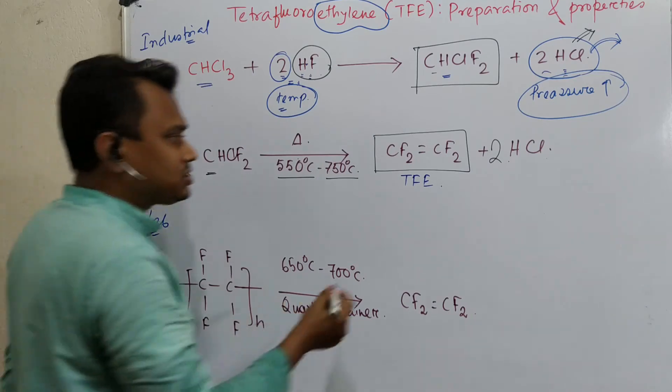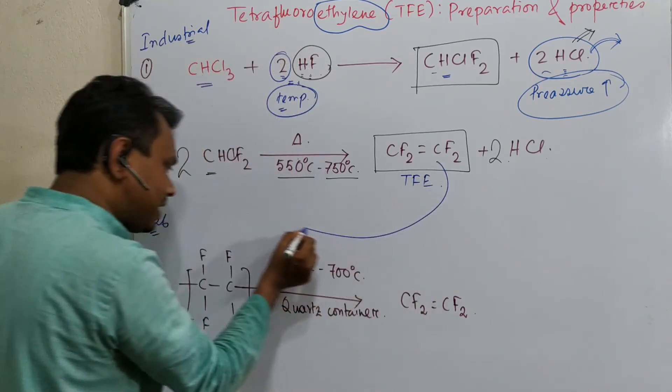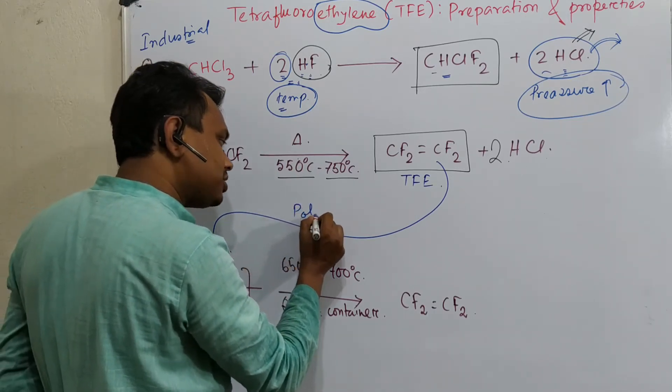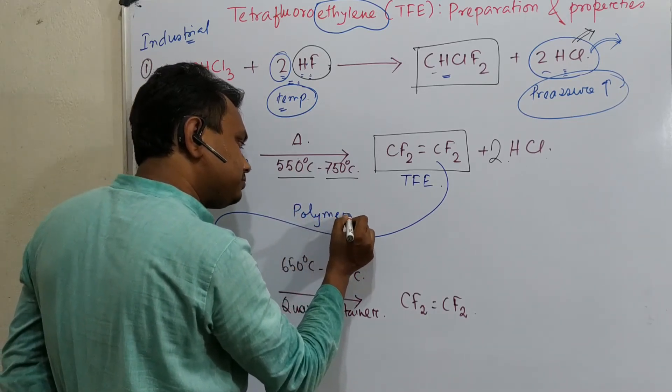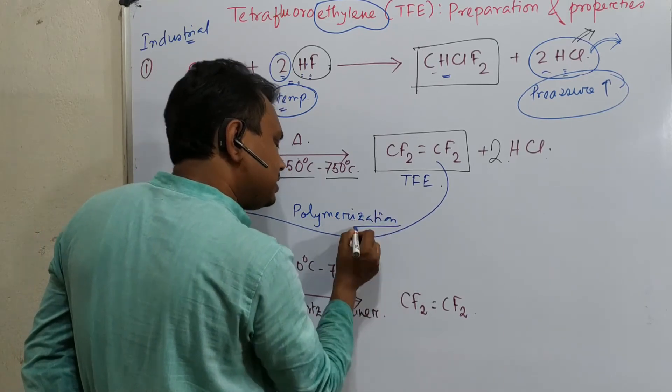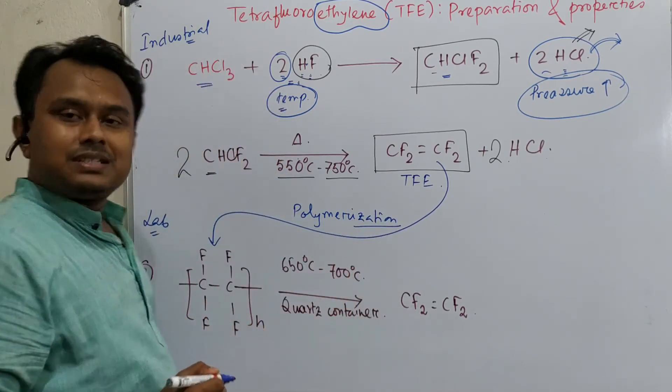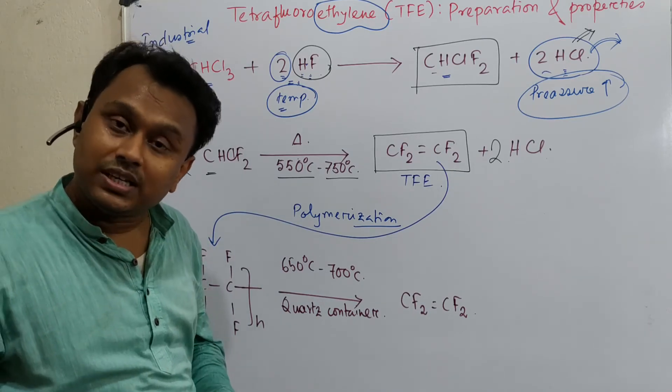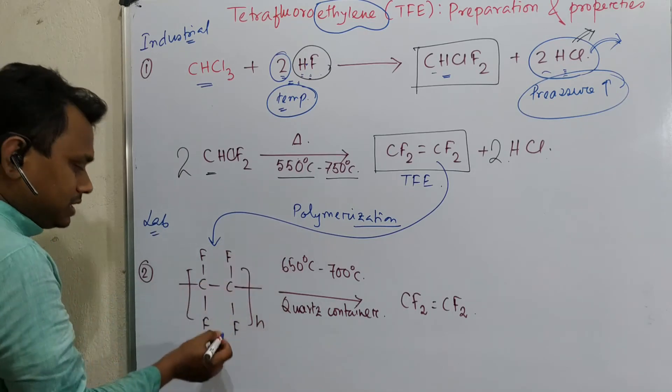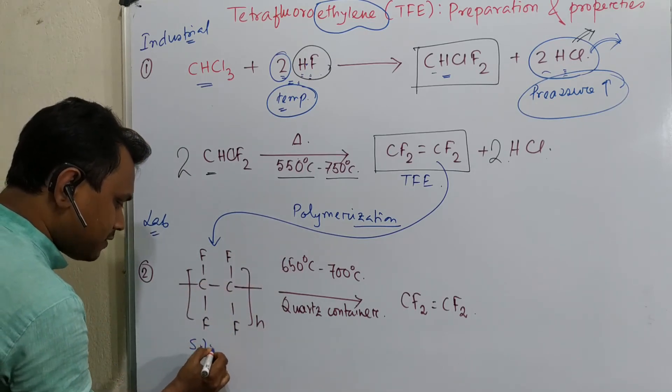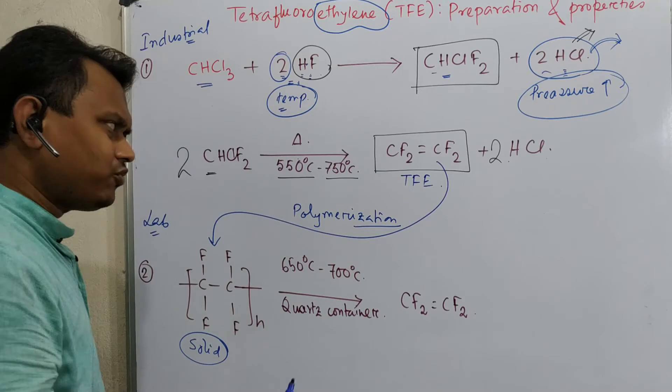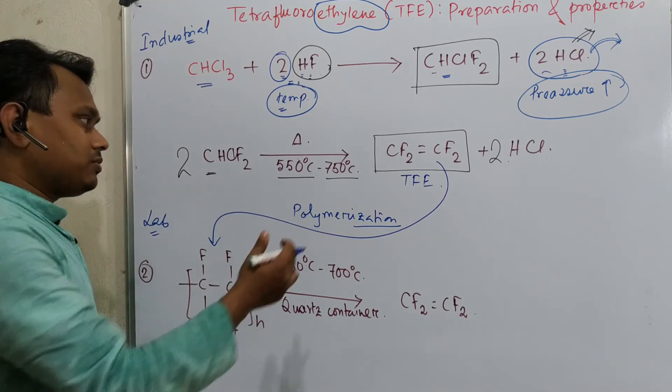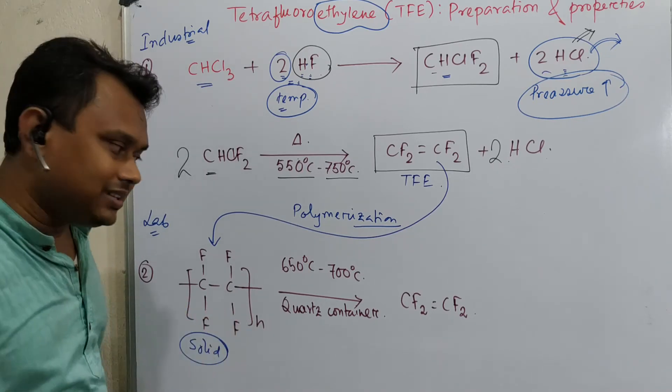Now question, lab-based method. Actually this tetrafluoroethylene is polymerized to produce this Teflon industrially. So this is a polymerization process. And just actually, this tetrafluoroethylene is a gas, and selling gas molecules, transporting gas molecules is difficult. But if this polymer is—Teflon is a solid, generally white solid I have also used. So this is a white solid. Now huge amounts of Teflon is there. So in laboratory what they do, they heat this polymer.